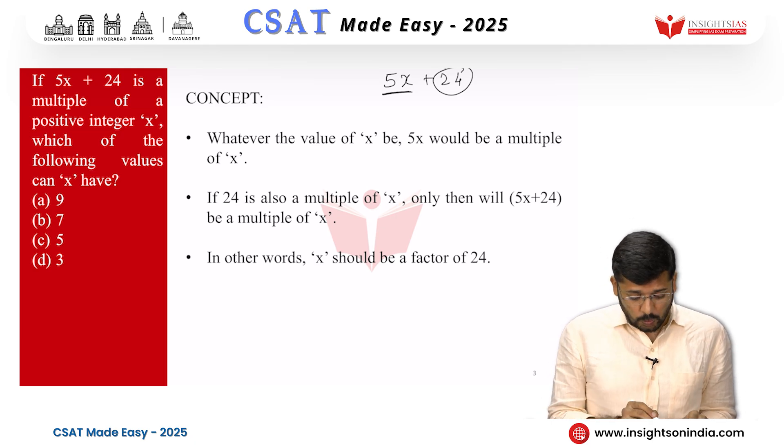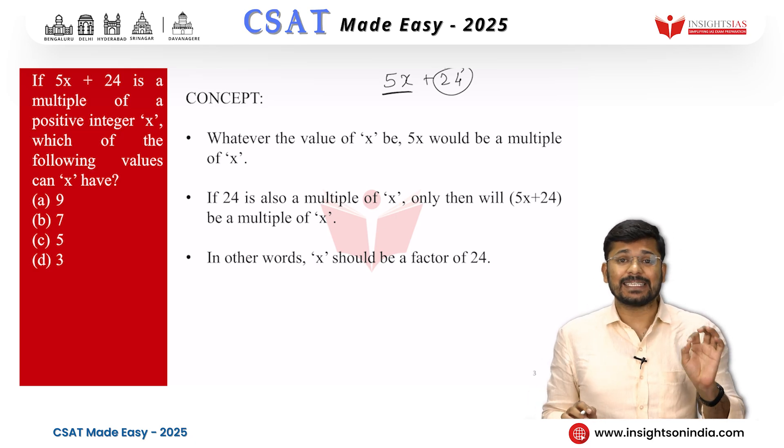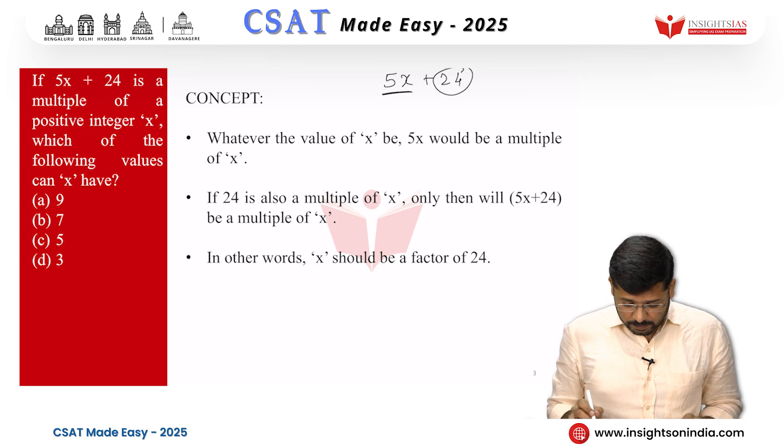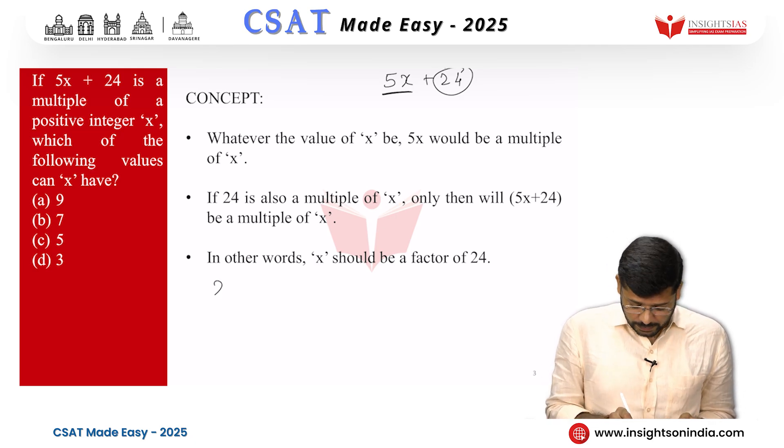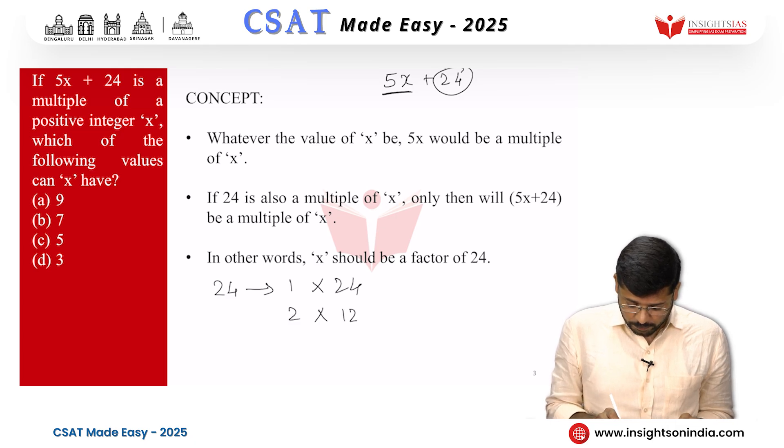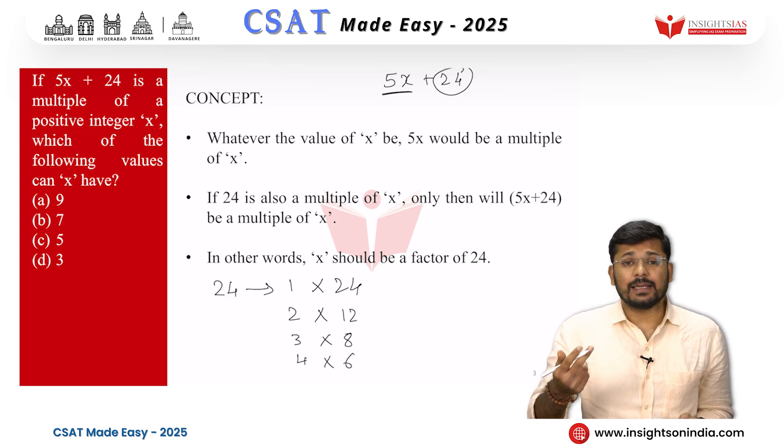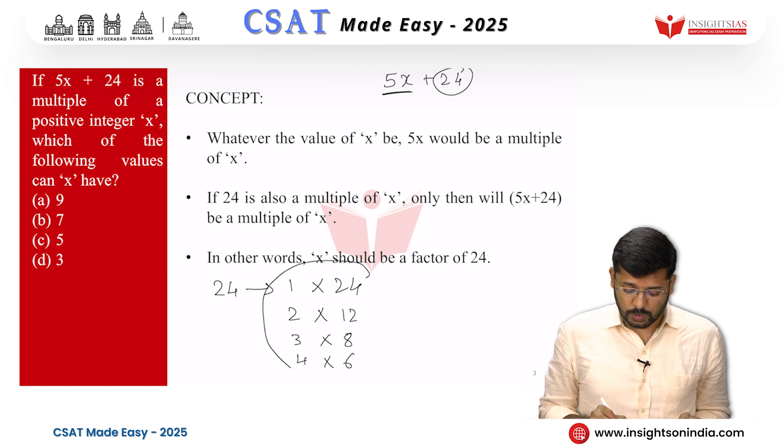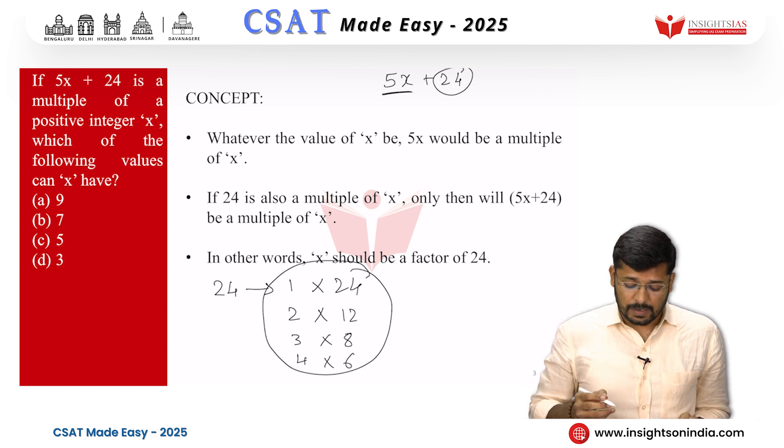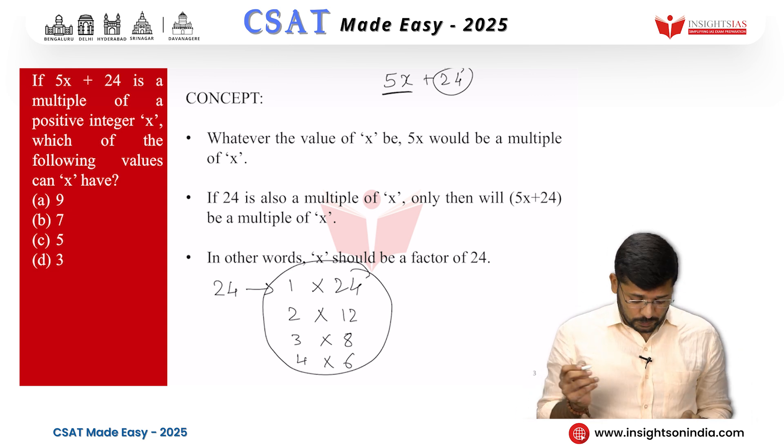Now the question asks which of the following values can x have? What are the factors of 24? The factors of 24 are 1 into 24, 2 into 12, 3 into 8, 4 into 6, then 6 into 4, 8 into 3, 12 into 2, 24 into 1. So 24 has totally 8 factors. Now x can take any of these values.